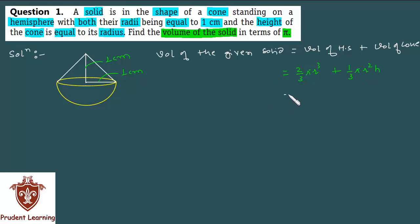Substituting the values, we have 2/3 × π - keep π as is, don't substitute its value - times radius of hemisphere which is 1 cm, 1 cubed, plus 1/3 of π, cone radius is again 1 cm, square it, times height. The cone height is also 1 cm.